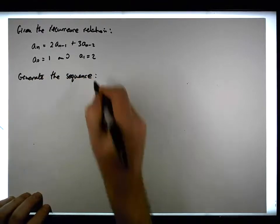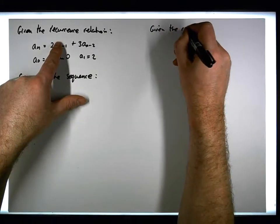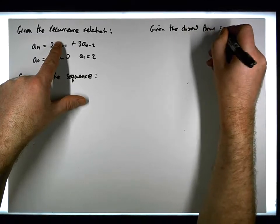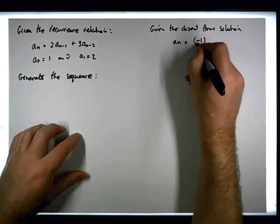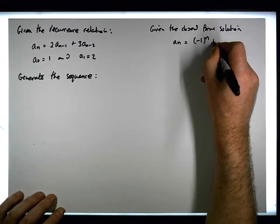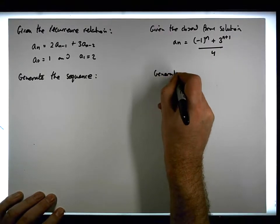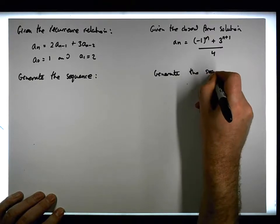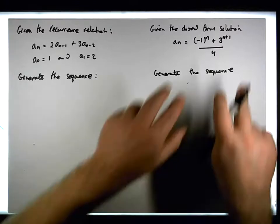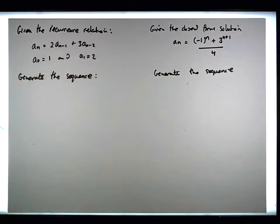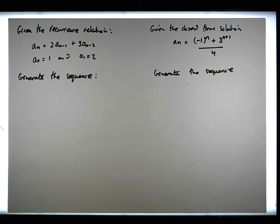Given the closed form solution, aₙ is equal to (-1)ⁿ plus (3^(n+1)) over 4, we also want to generate the sequence. So we have two ways of defining the sequence: from the closed form perspective and from the recurrence relation perspective. We could also define the sequence from the generating function perspective.